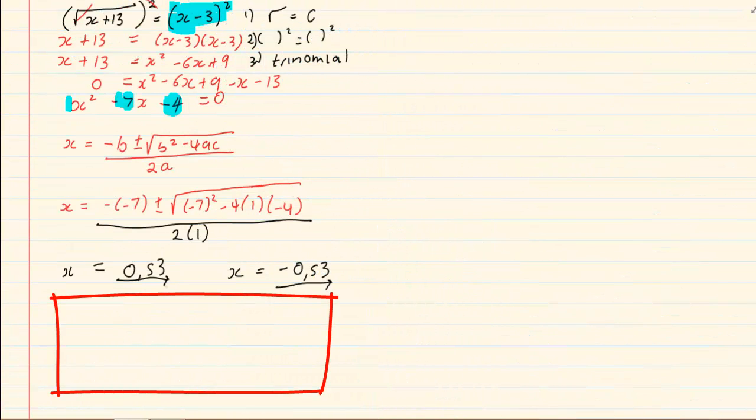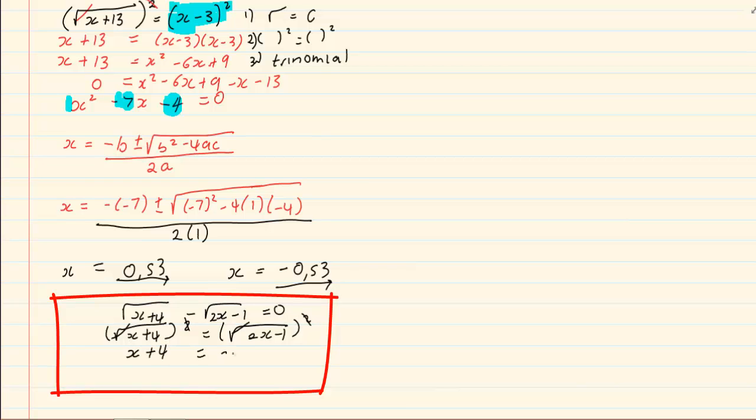If we are given a question where we have two roots, then we would make it root equal to root. We would square both sides, but this one is always easier because the roots cancel out. So we are left with simple x plus 4 is equal to 2x minus 1. If we are solving for x, we are going to have x is equal to 5.